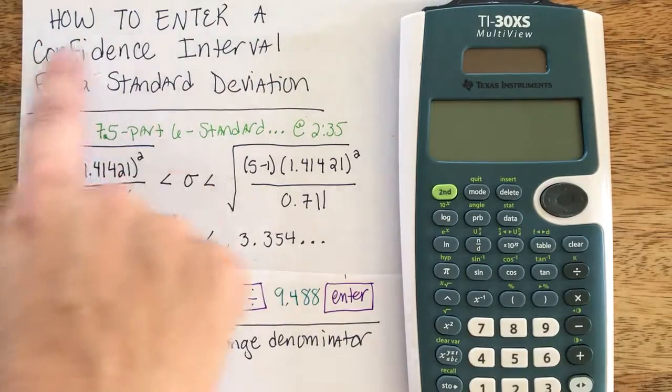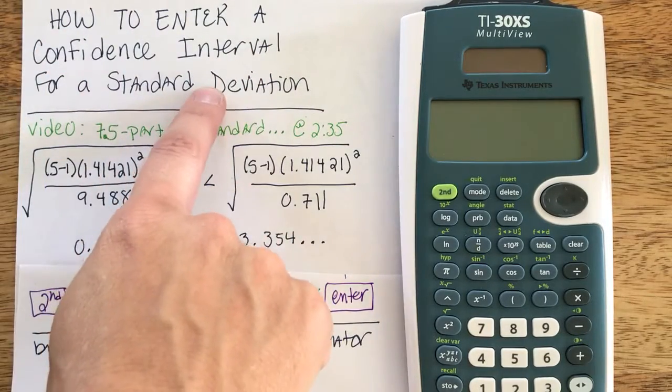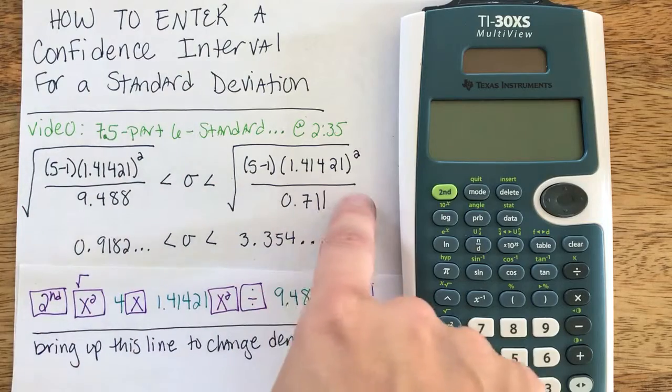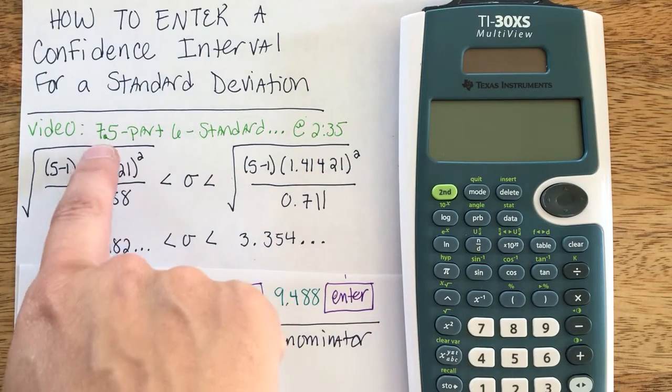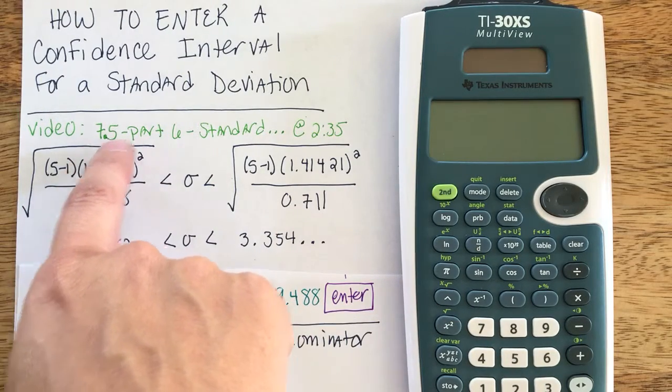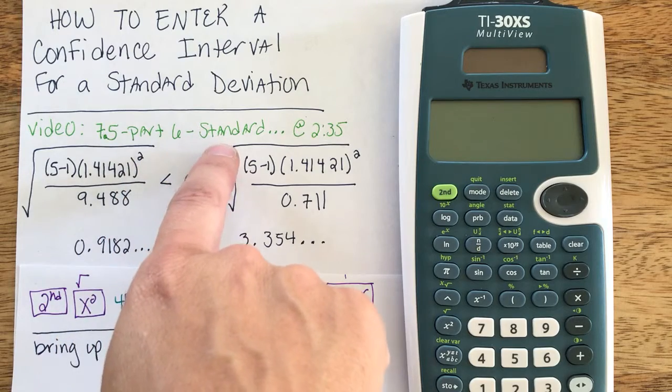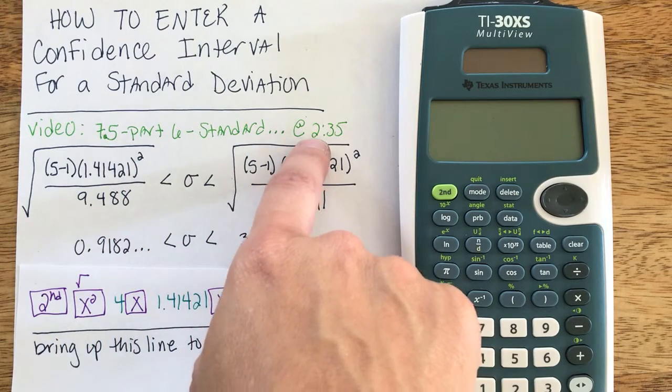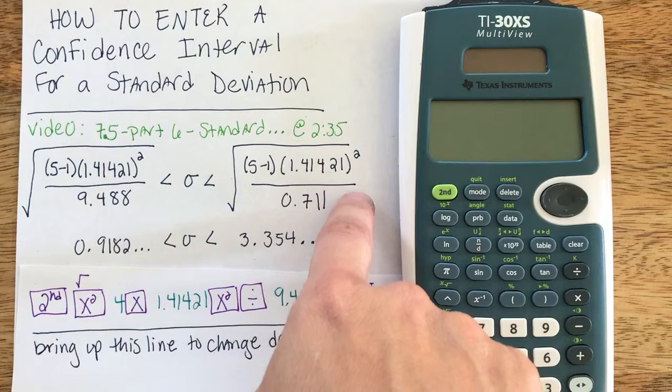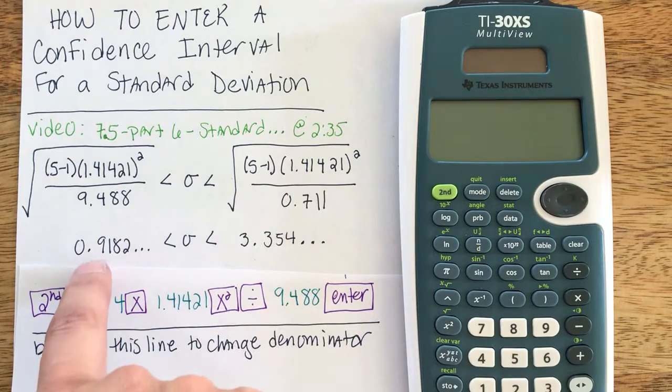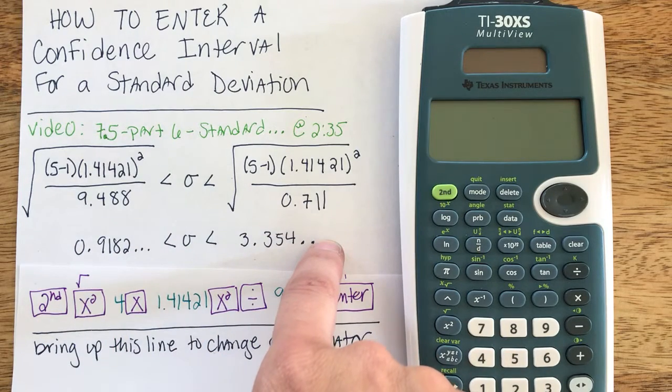Now I'm going to show you how to enter a confidence interval for a standard deviation. The problem I'm displaying I took from my video titled 7.5 Part 6, Standard Deviation, timestamped at 2 minutes and 35 seconds. I solved this problem and the results I need to get are also displayed on the screen.